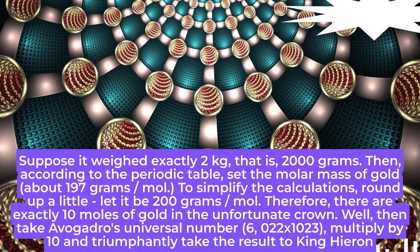Well, then take Avogadro's universal number, 6.022×10^23, multiply by 10 and triumphantly take the result to King Hieron.